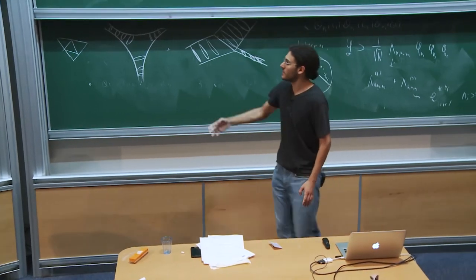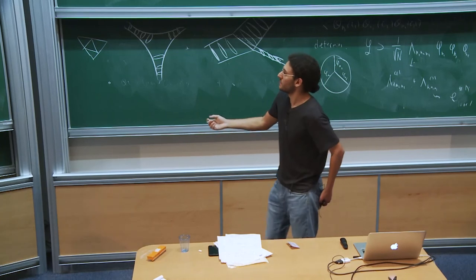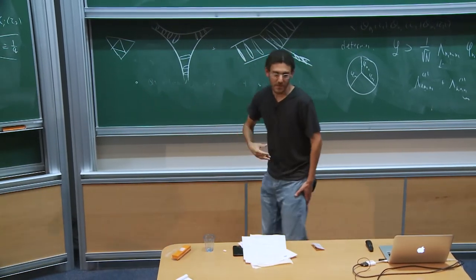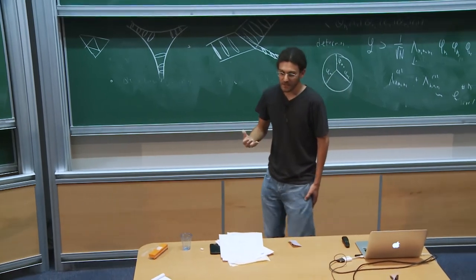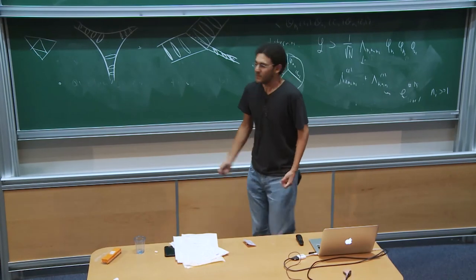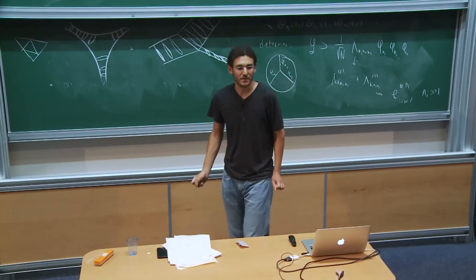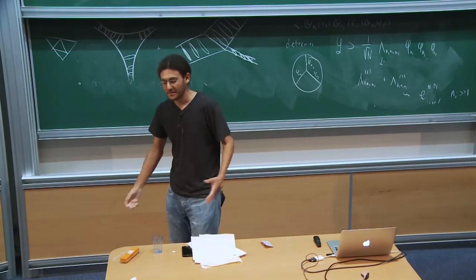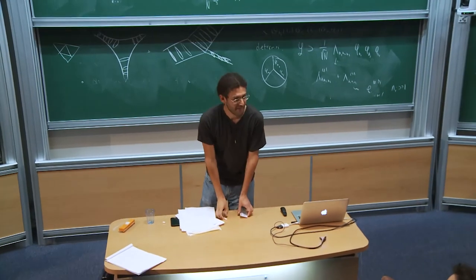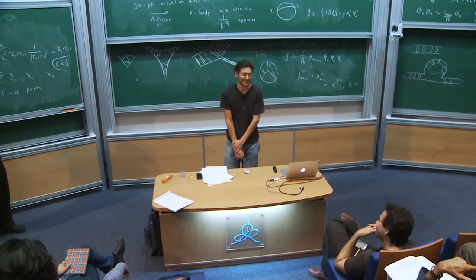Because we changed the kinetic term, there's no time reparameterization invariance, and the bulk is not gravity — it's just field theory in a fixed background. There's no dilaton in the bulk. For the purposes of constructing the bulk theory, this makes it easier. For the purposes of studying the information paradox, it's not good, because there's no gravity.